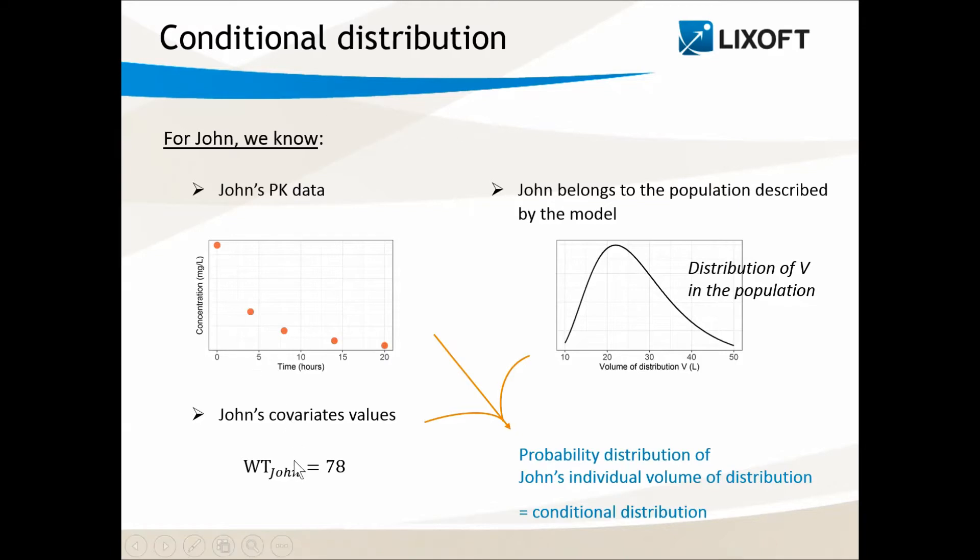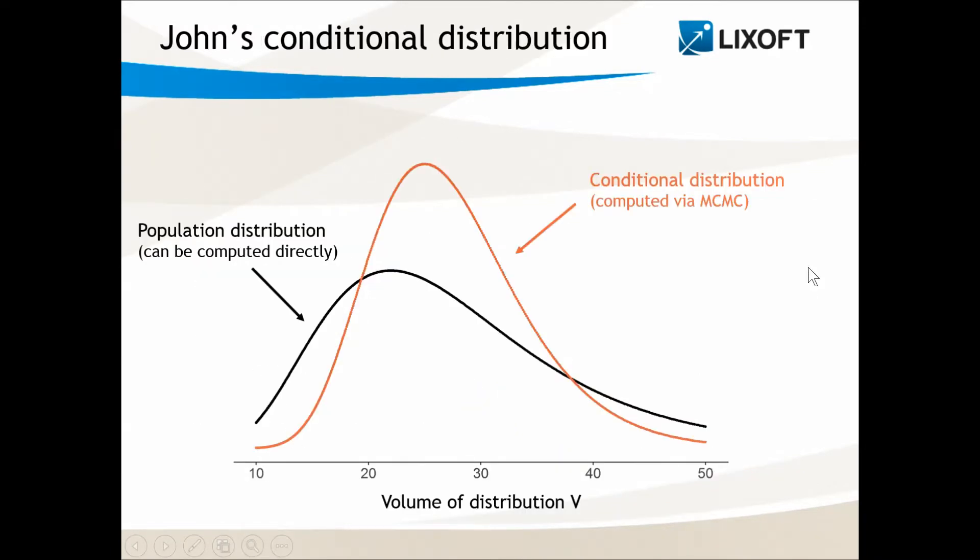Conditional because it is conditioned on all this. We can plot John's conditional distribution here in red. The conditional distribution cannot be calculated in closed form, but we can estimate it using samples obtained via Markov chain Monte Carlo.